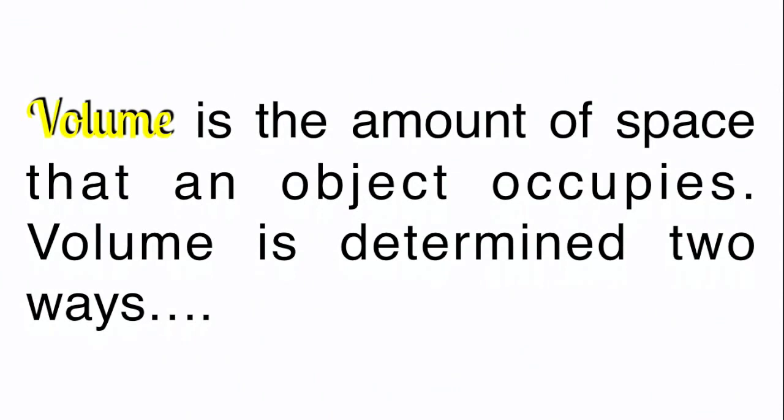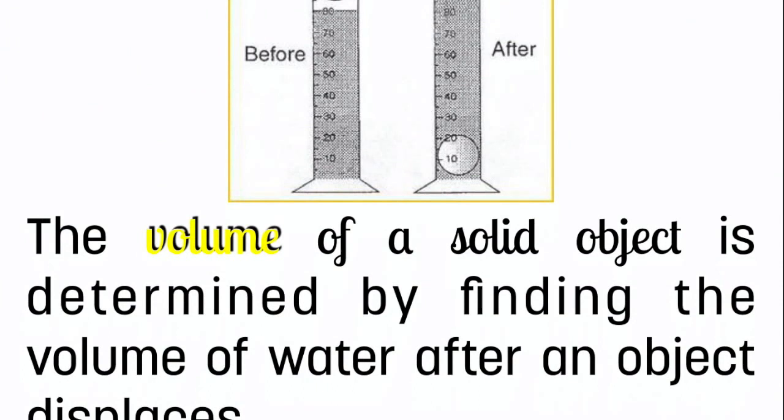Another measuring quantity is volume. That's the amount of space that an object occupies. Volume is determined in two ways: the three-dimensional measurement. If we want the volume of a solid object, we can find it by using water displacement. That's basically when you take the object and you drop it into a graduated cylinder or container with water.